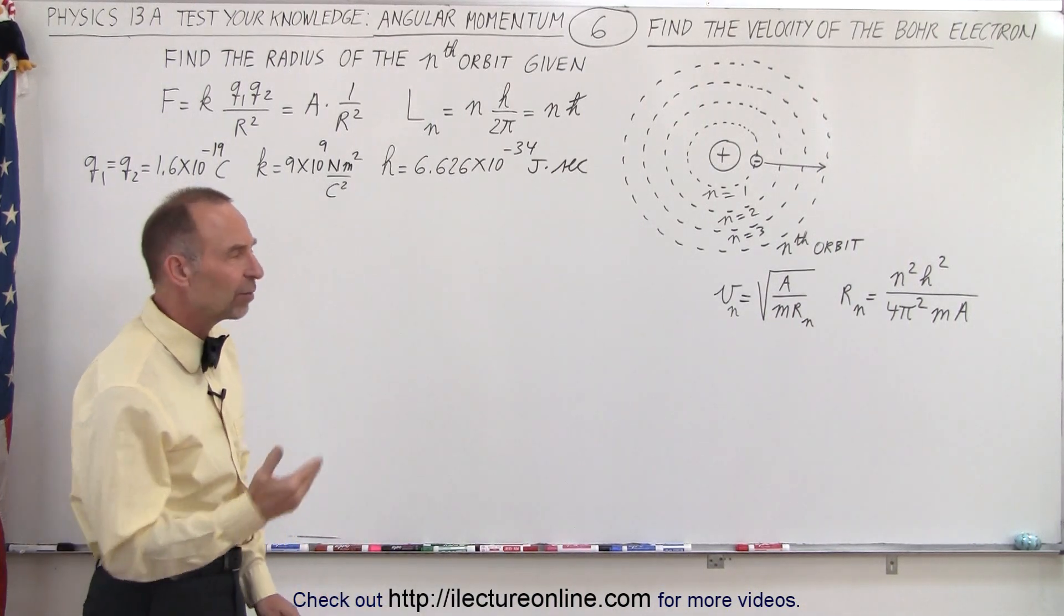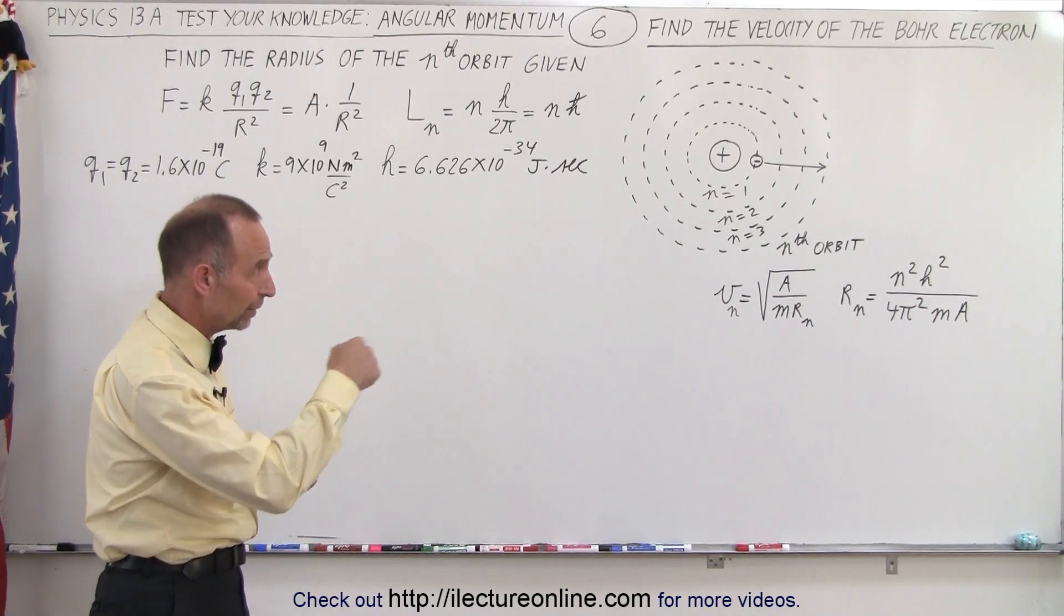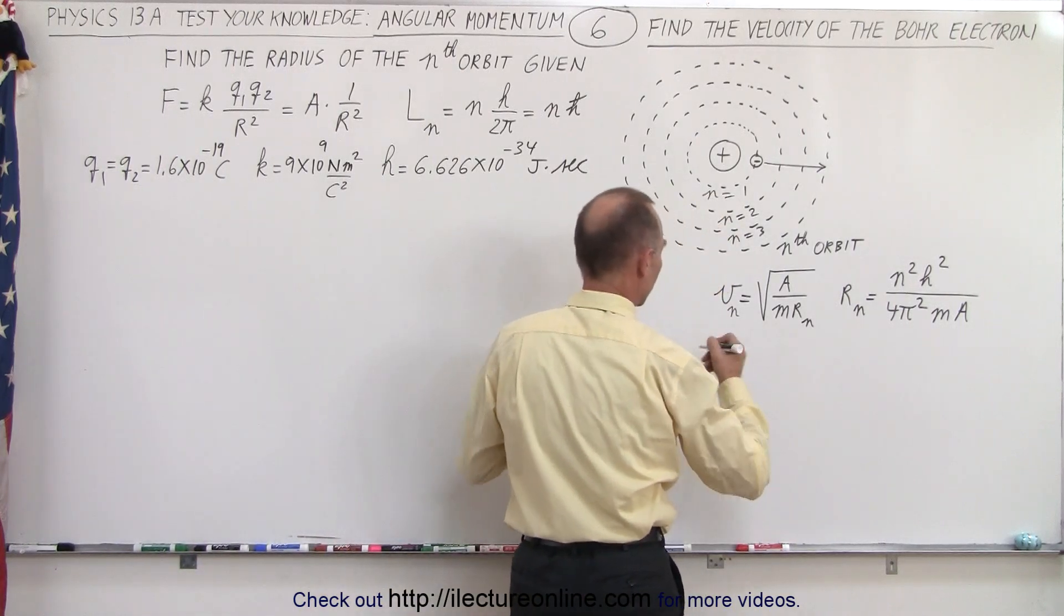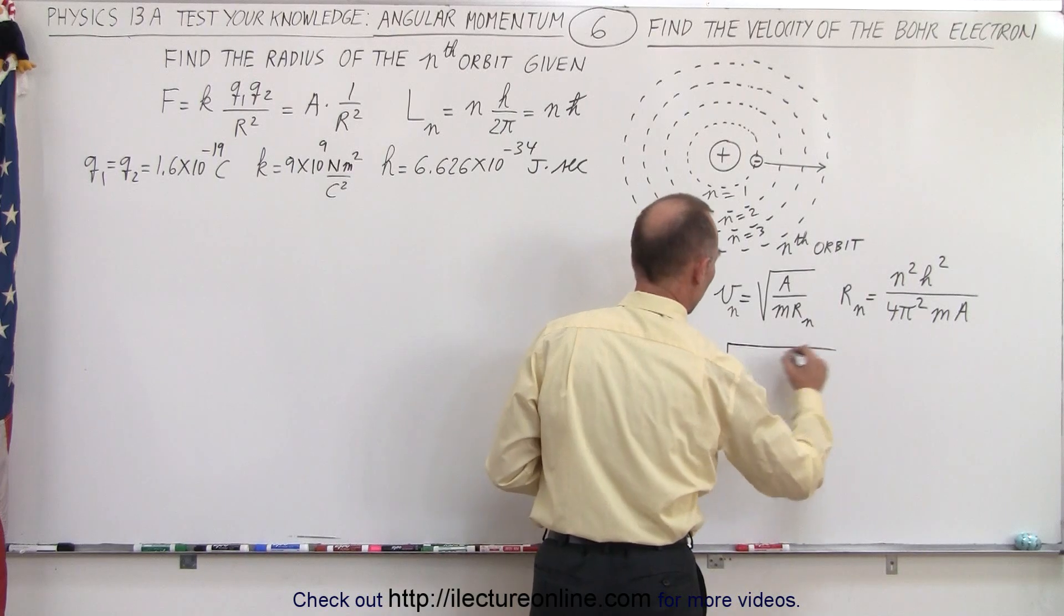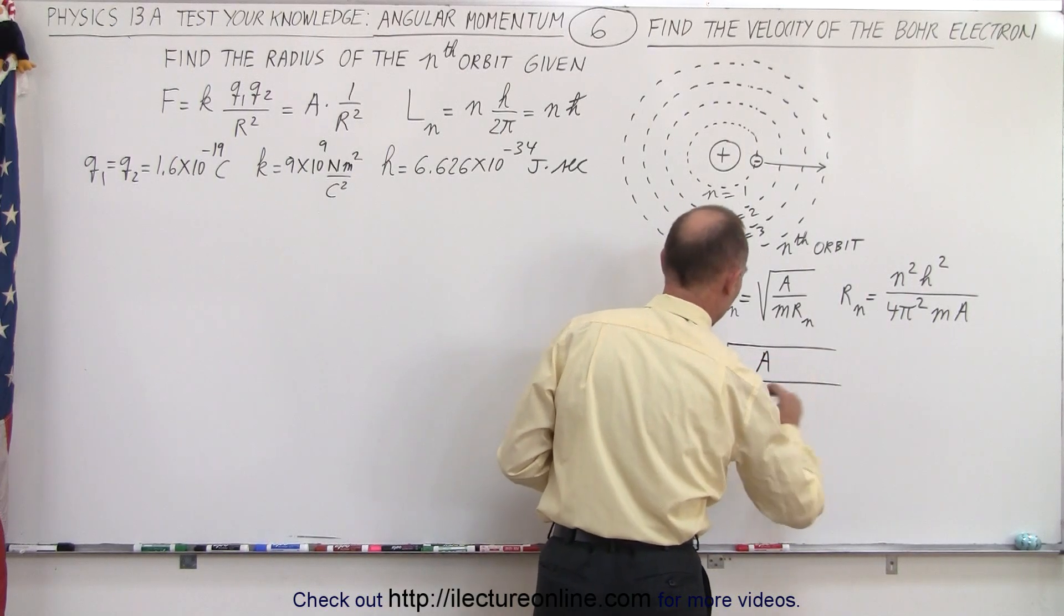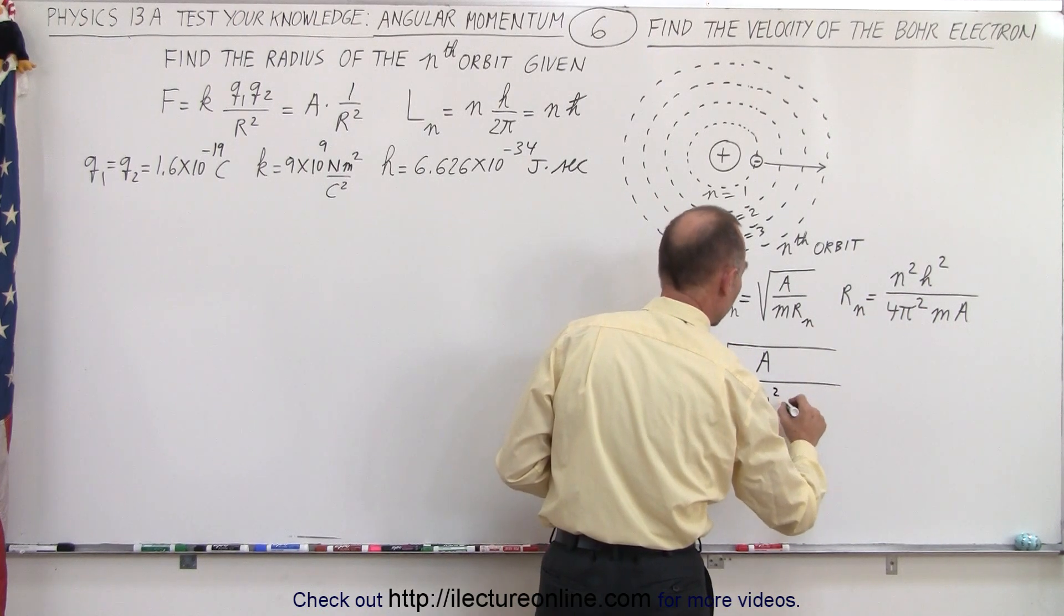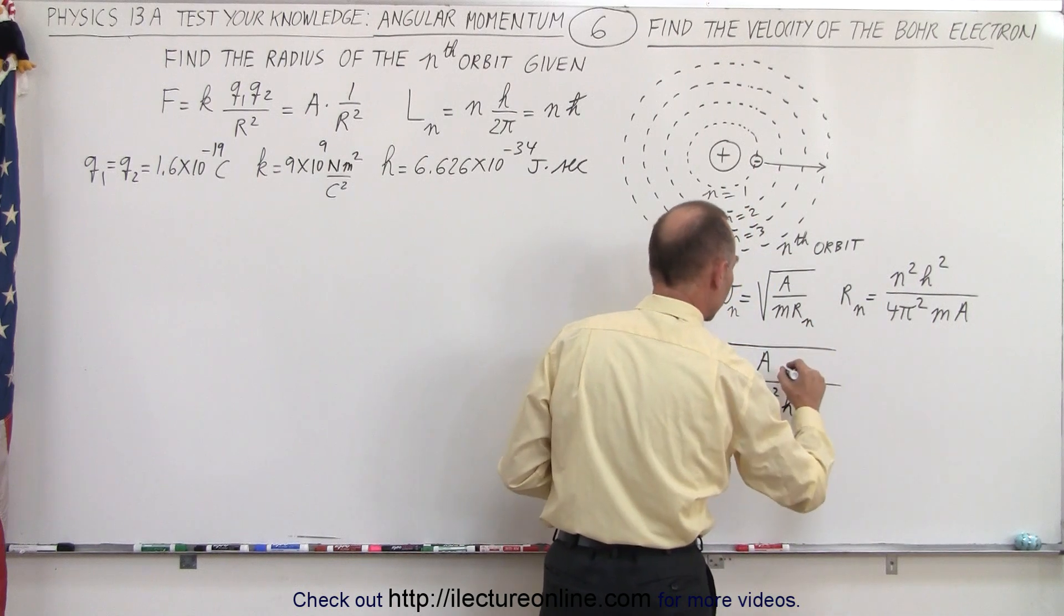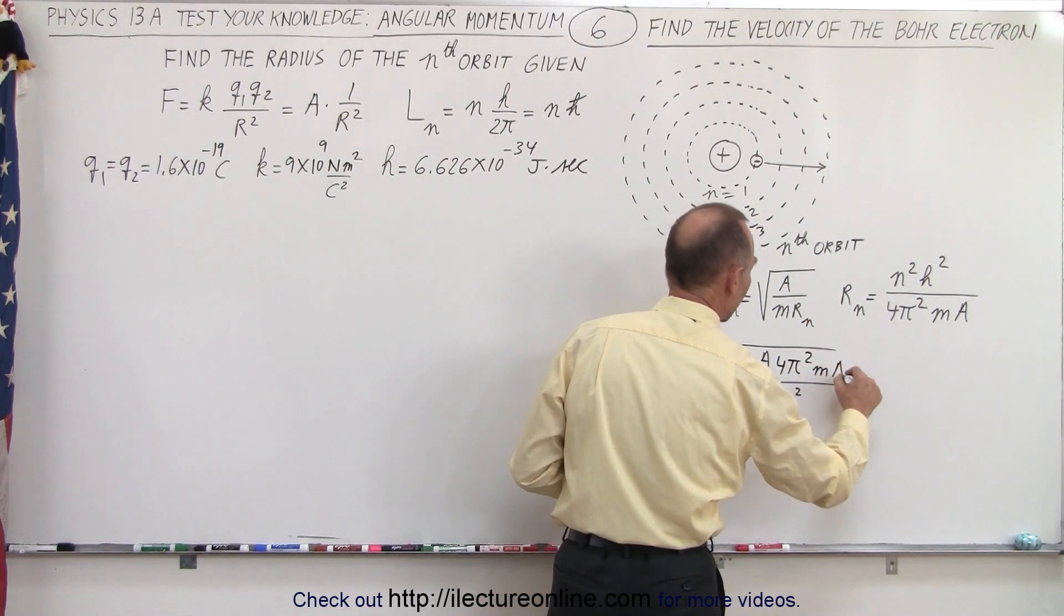So let's try to find the velocity of an electron in the nth orbit, and then ultimately when n equals 1, the innermost orbit. So when we plug r sub n in here, we get v sub n is equal to the square root of a divided by m times r sub n, which is equal to this. So it would be n squared, h squared, and everything in the denominator goes to the numerator.